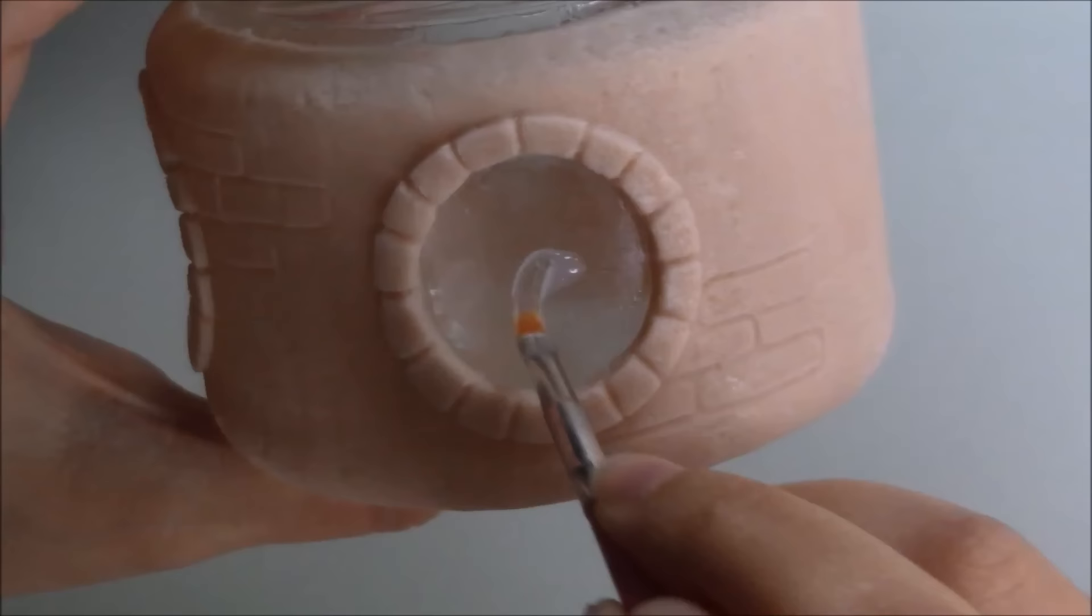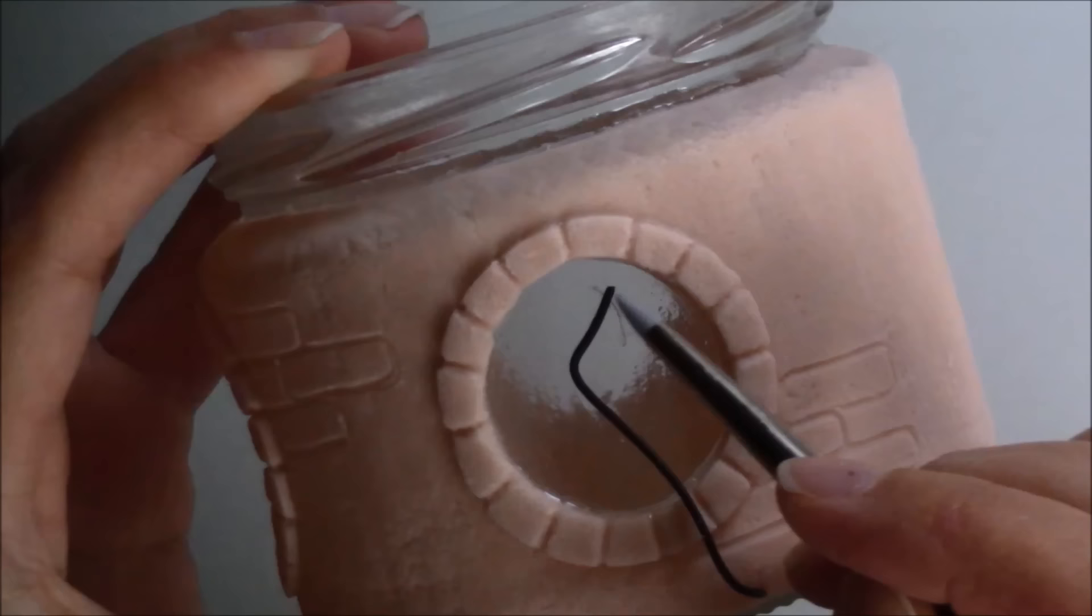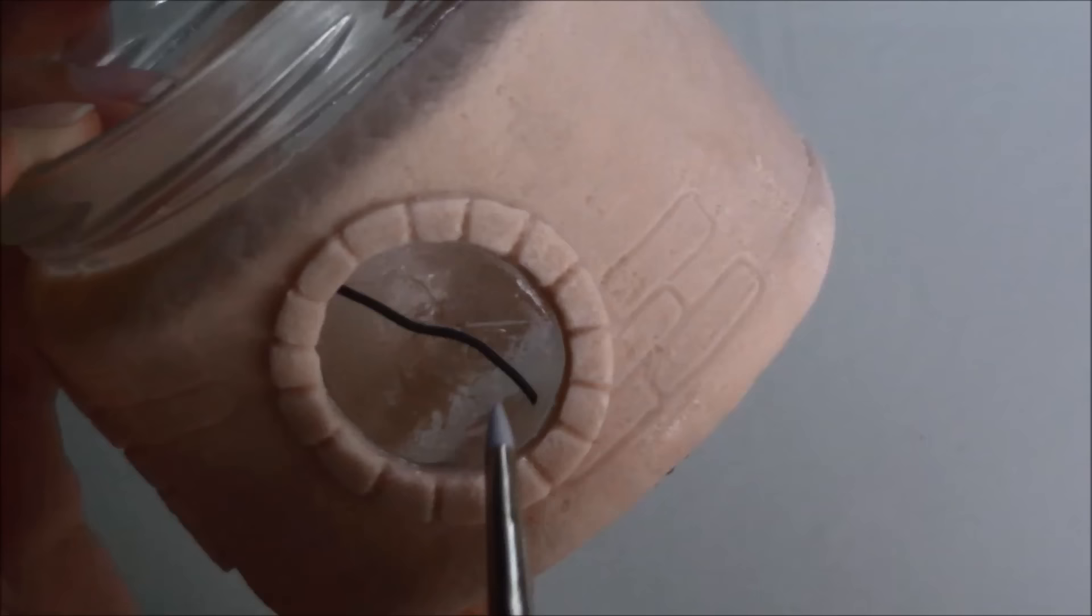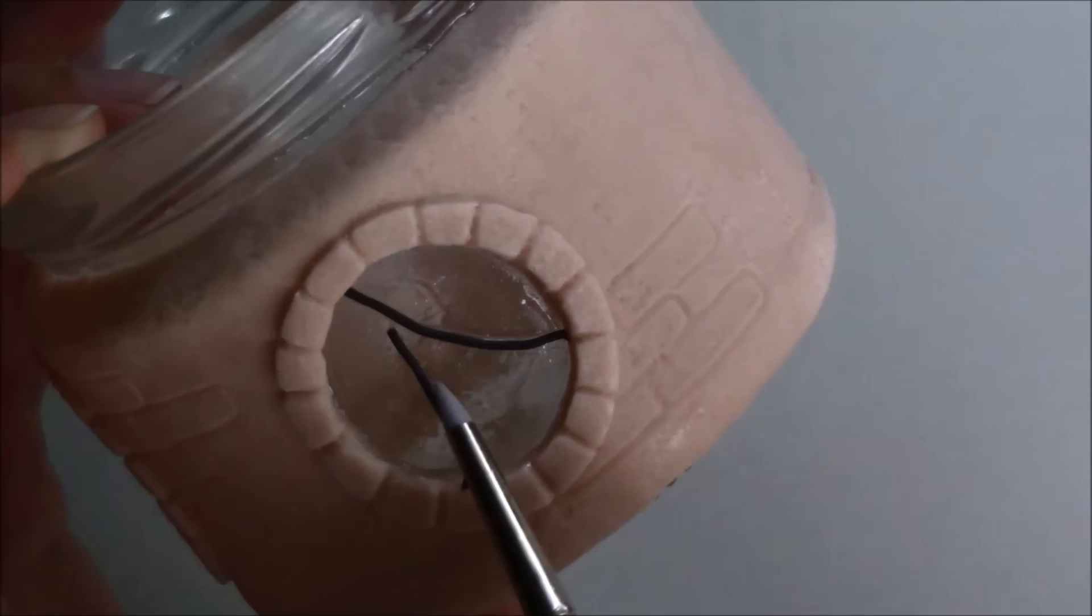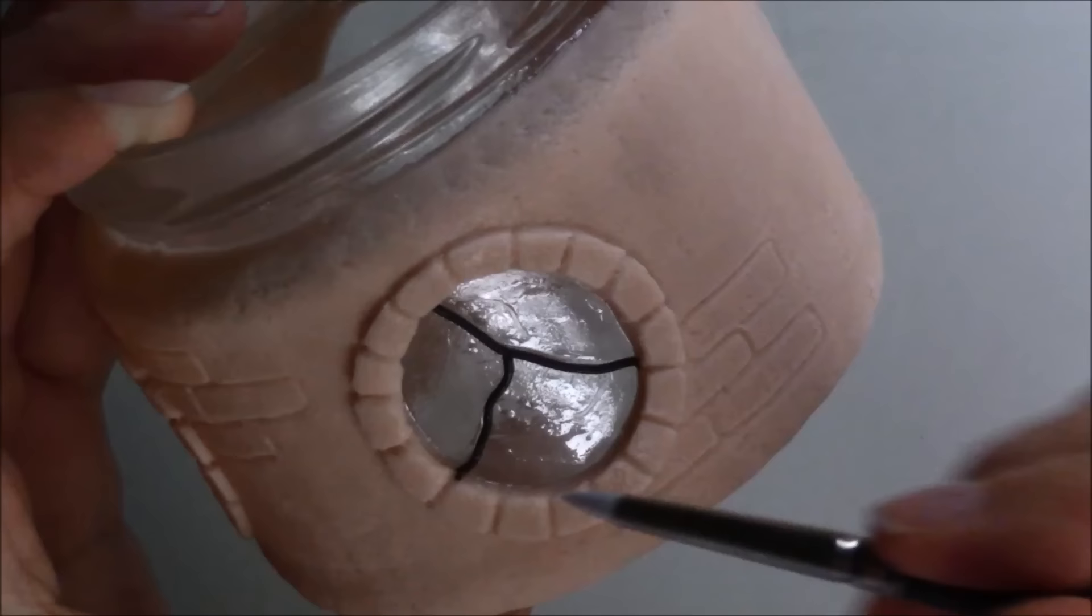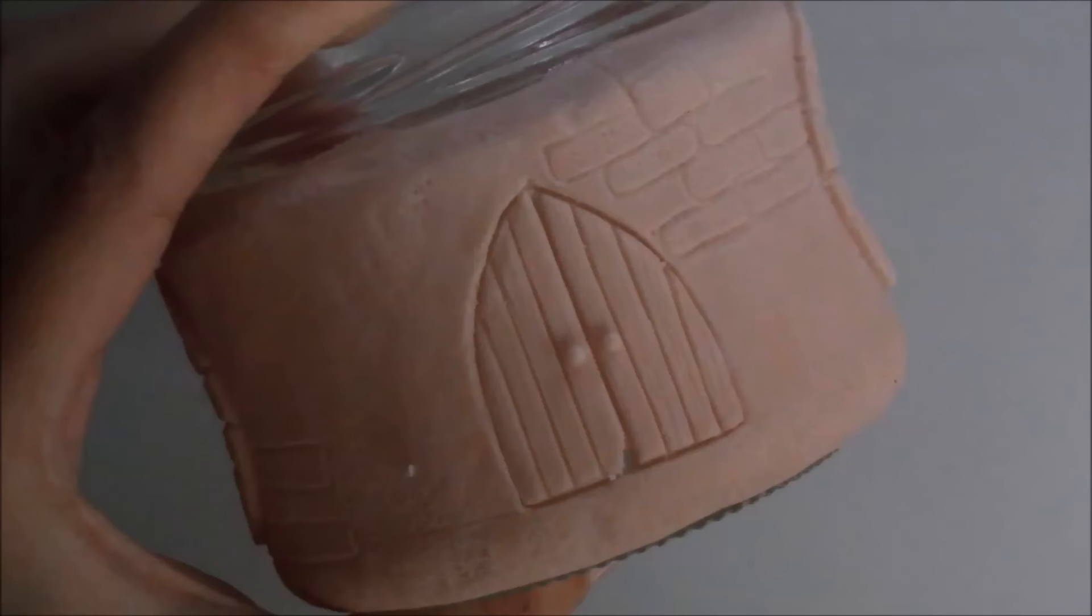I spread more Fimo liquid on the windows to add thin snakes of black clay to simulate stained glass. I added two round door knobs and a stone frame around the door as well.